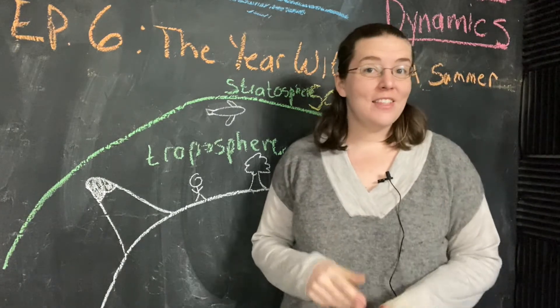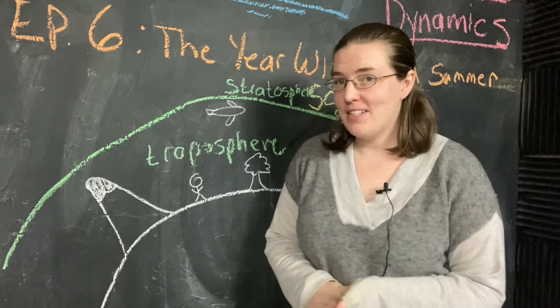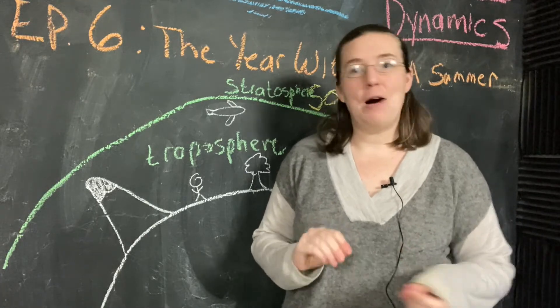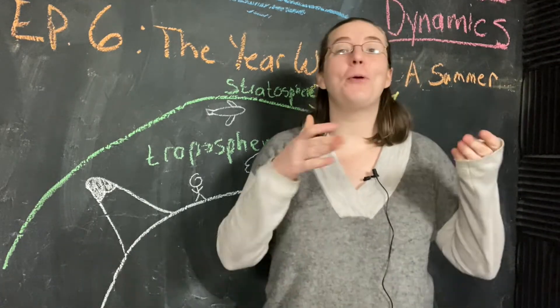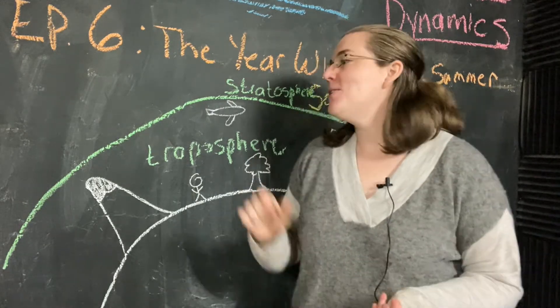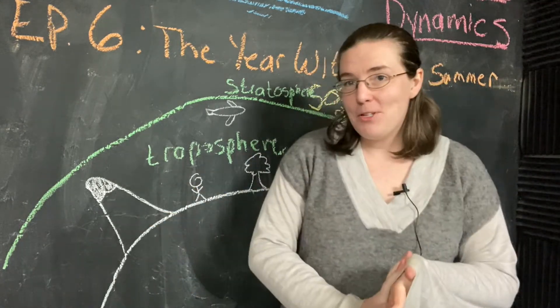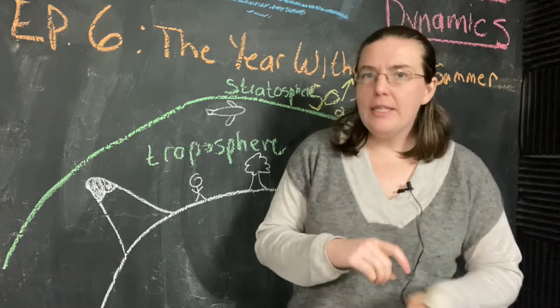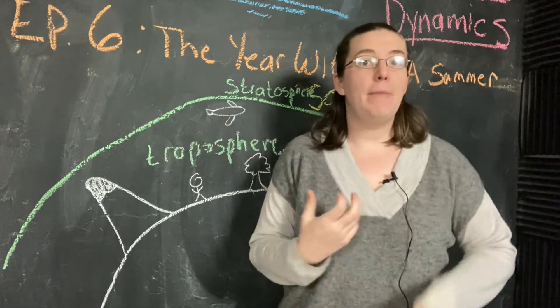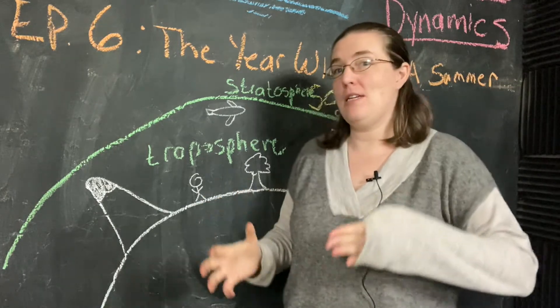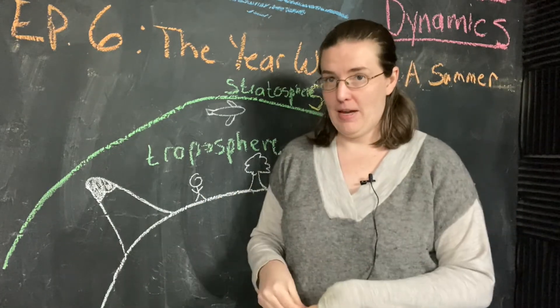One last thought on our naturally occurring climate disaster is to think about the time scale, because that's something we talked about a lot with our Milankovitch cycles. This was a volcanic eruption that had really terrible effects on humans and on the planet for about three or four years, and then those effects dissipated.